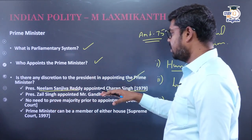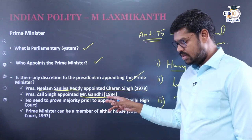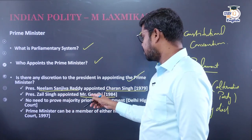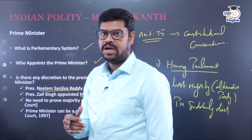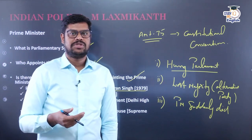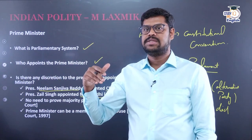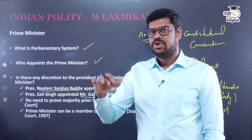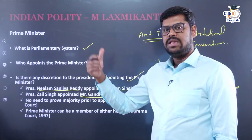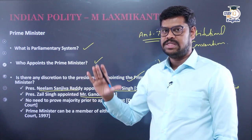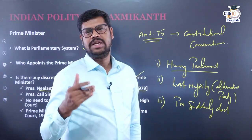Similarly, President Zail Singh appointed Rajiv Gandhi as the Prime Minister of India in 1984. This was when Indira Gandhi, who was the Prime Minister, was assassinated and suddenly died. There was no obvious successor and nobody had been chosen as the leader of the party. In the absence of a party leader, Rajiv Gandhi was appointed as Prime Minister — the President exercised his discretion. Later, the Congress party chose him as the leader, but at the time of appointment he was not the leader of the party.